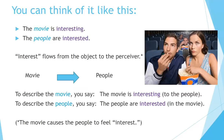You can think of it like this: the movie is interesting; the people are interested. Interest flows from the object to the perceiver — movie to people. To describe the movie, you say the movie is interesting to the people. To describe the people, you say the people are interested in the movie. The movie causes the people to feel interest.